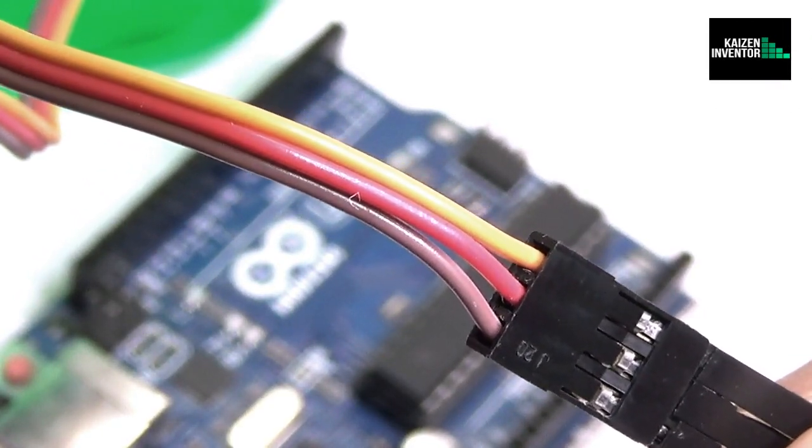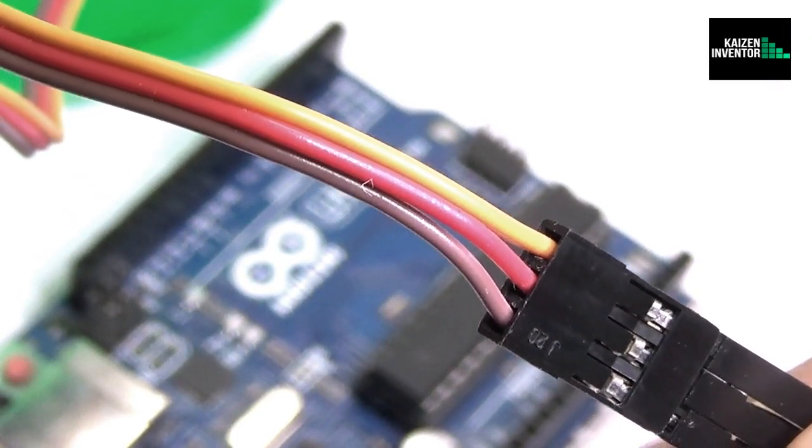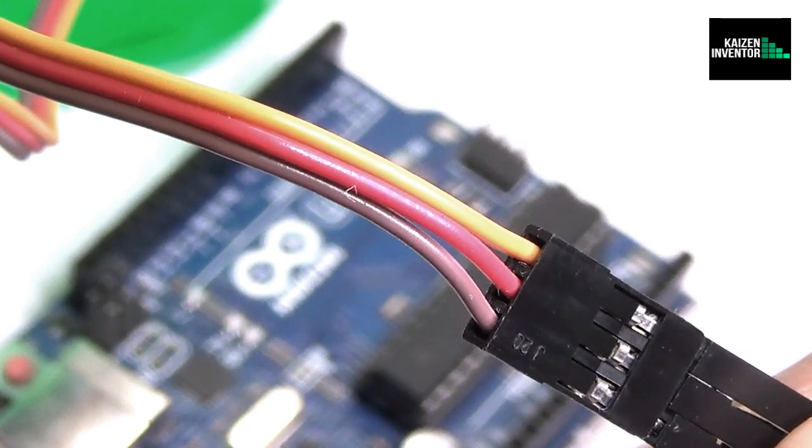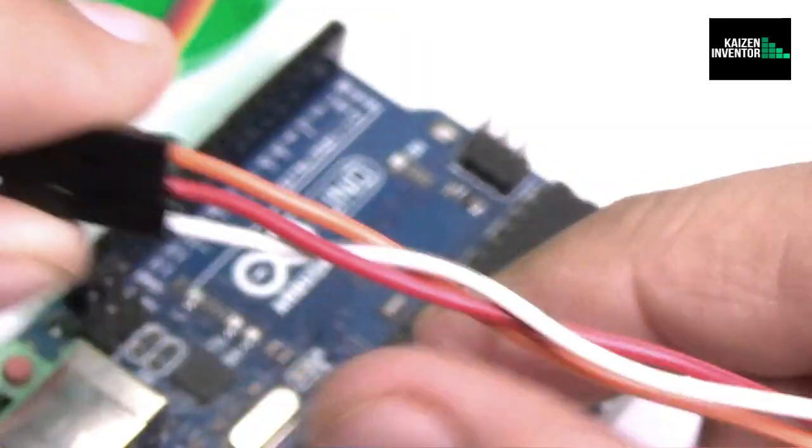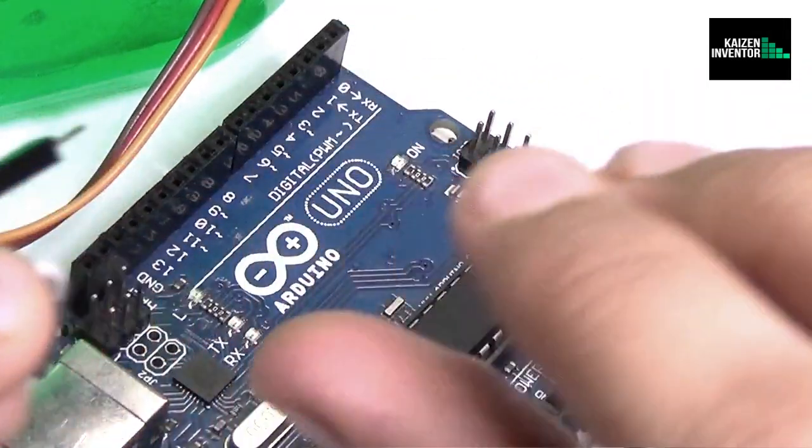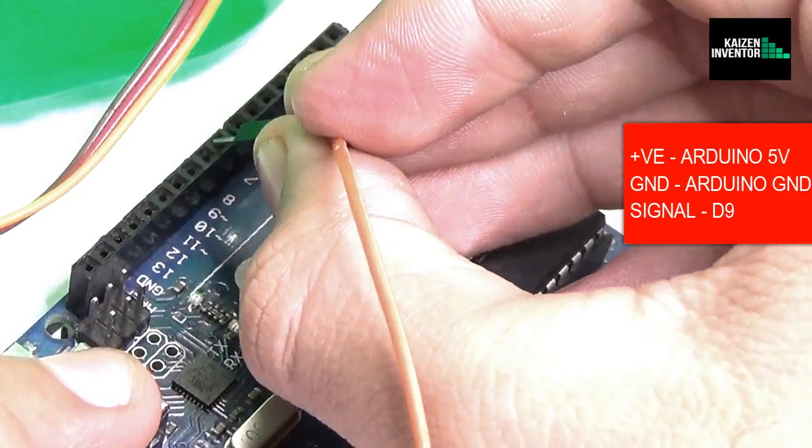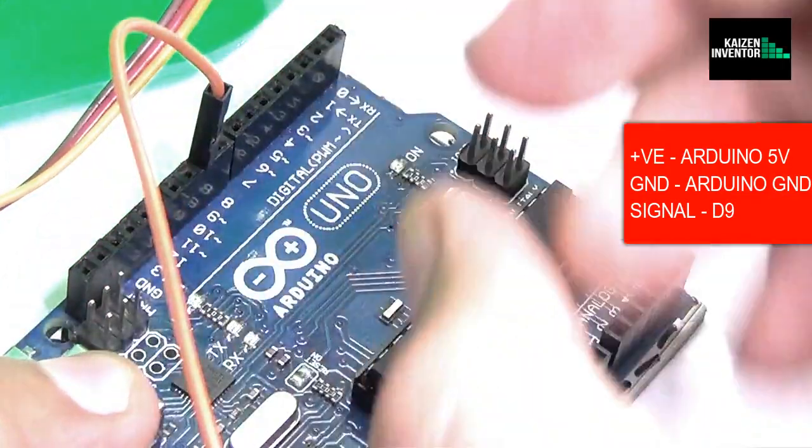As you can see there are three cables coming out of the servo motor: orange, red, and brown which stand for signal, power, and ground cable. So now we want to connect these cables to Arduino via jumper cables. The signal cable would go to the ninth pin of the Arduino.